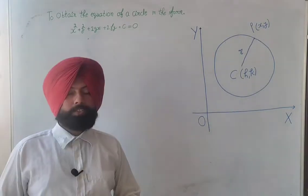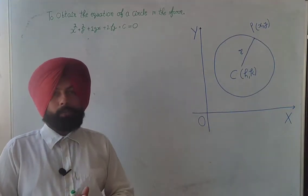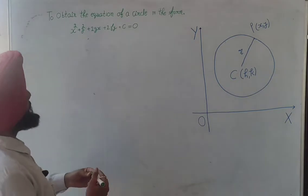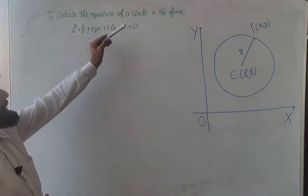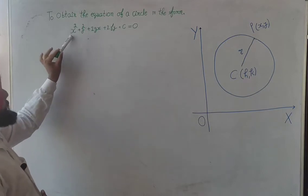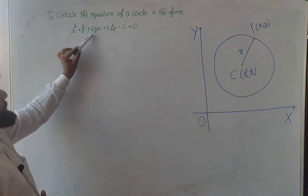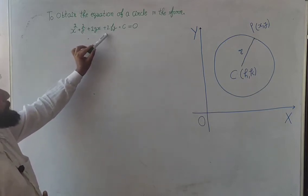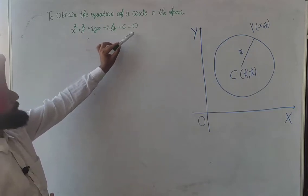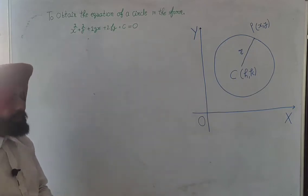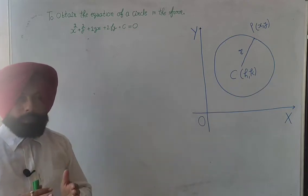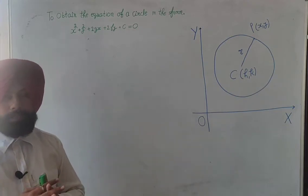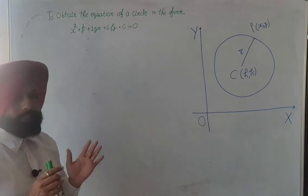Hello students, today's topic is to obtain the equation of a circle in the form x square plus y square plus 2gx plus 2fy plus c equal to 0. This is mathematics for class 11 related to circles.